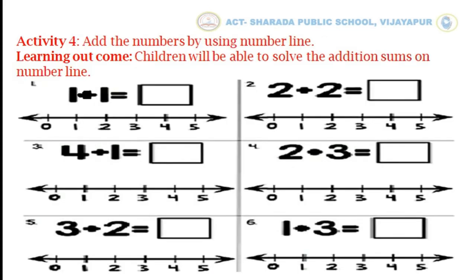Children, now we will do activity number 4: add the numbers by using a number line. Through this activity you will be able to solve the addition sums on the number line. The first one is 1 plus 1. Below this we have a number line. Now we will draw a line from 0 to 1 and 1 to 2, so the answer is 2. Now we will write number 2 in the blank box. 1 plus 1 is equal to 2. Similarly, you solve the remaining addition facts on the number line and complete this activity.